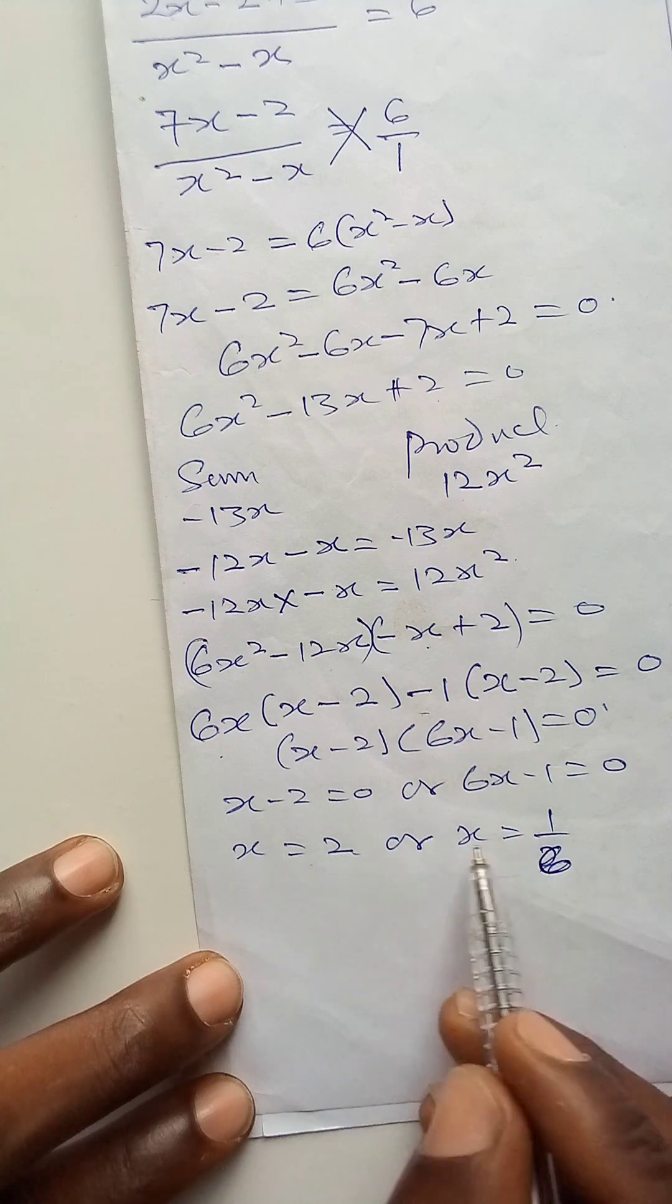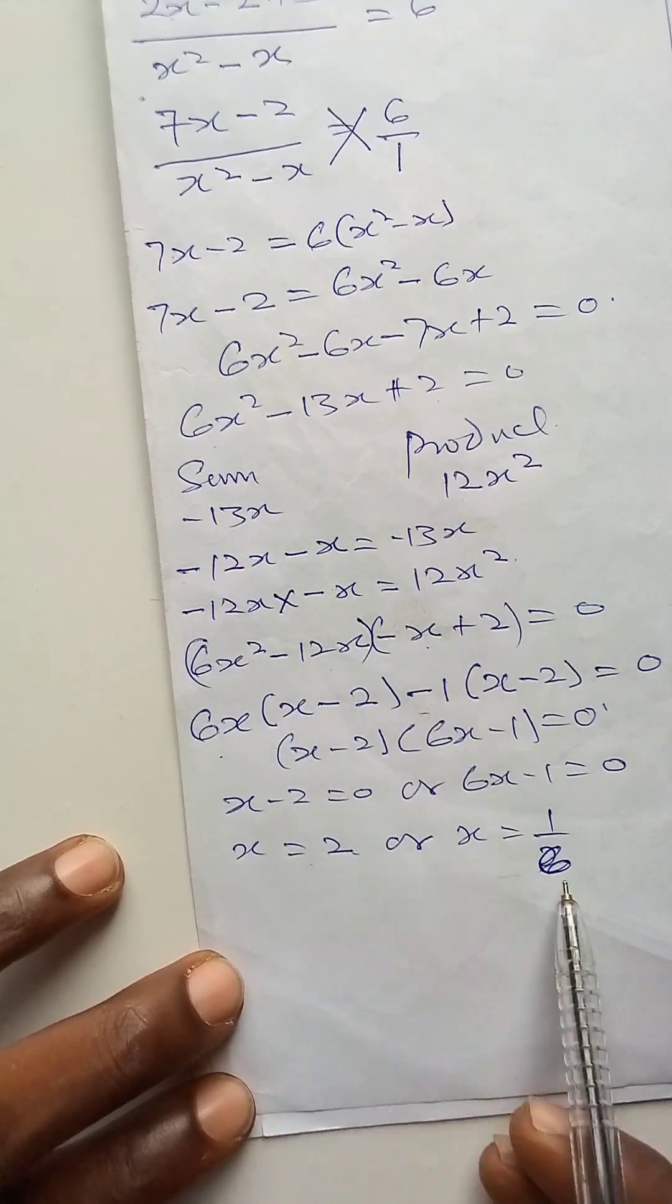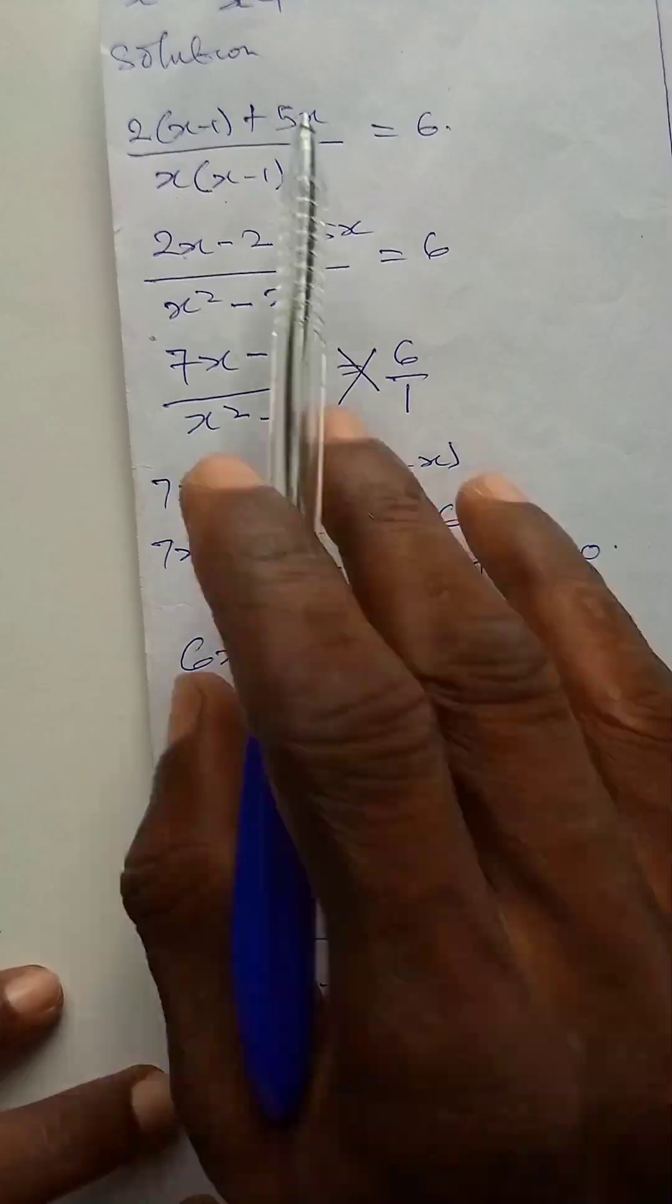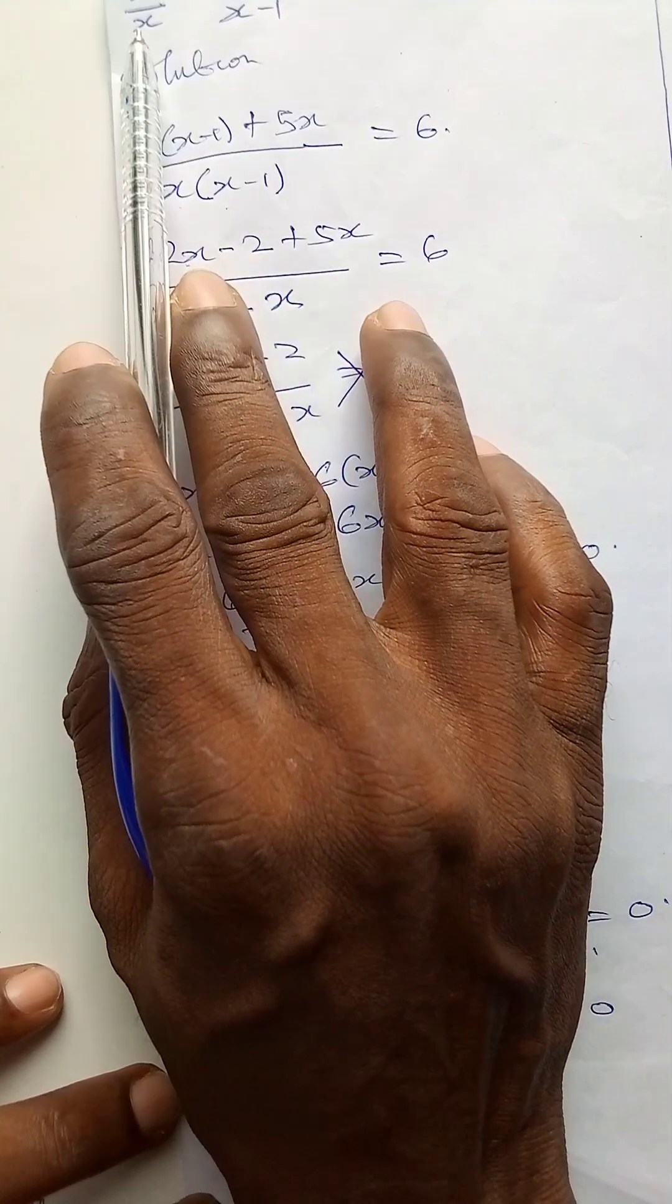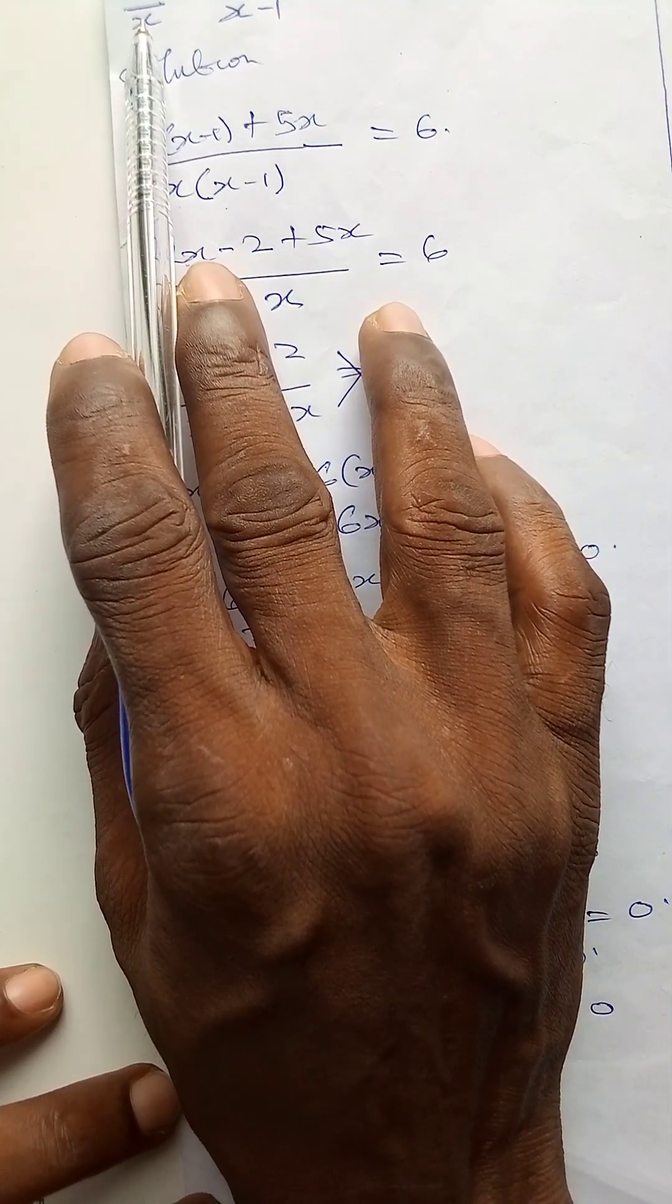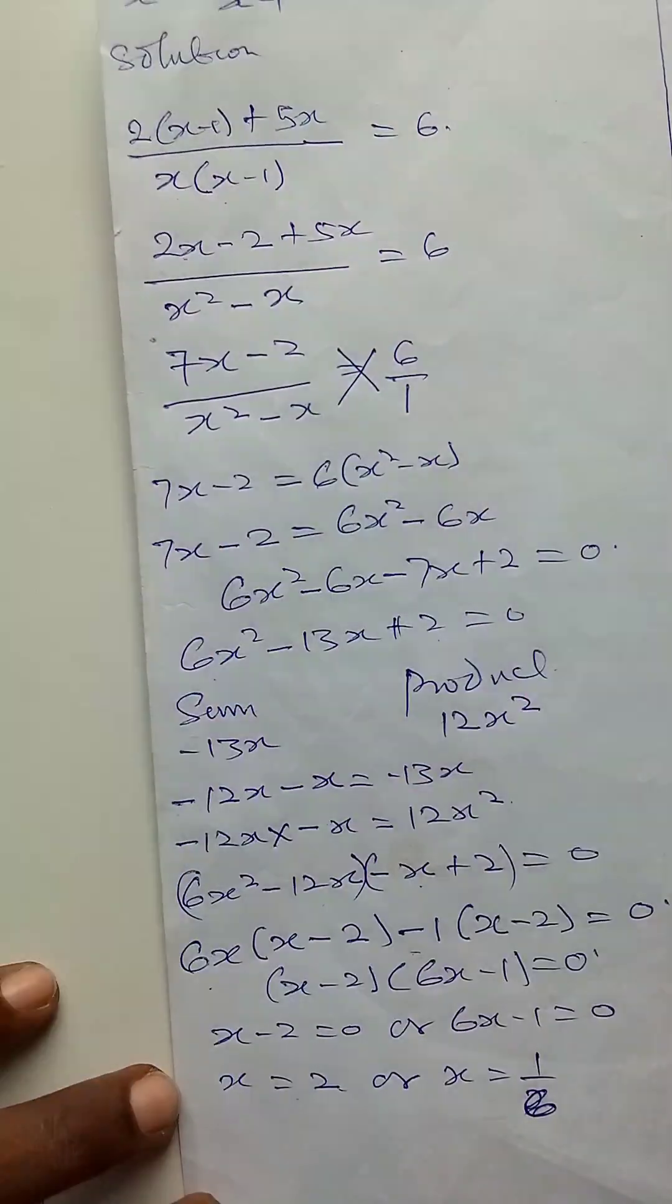These are the roots of this equation, and each of these roots of the equation satisfy this equation, 2 over x plus 5 over x minus 1.